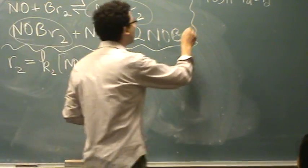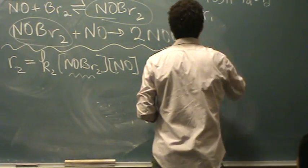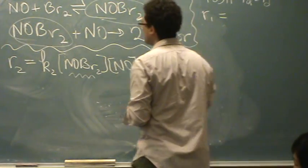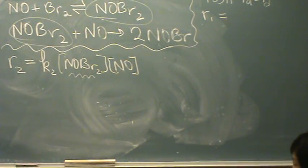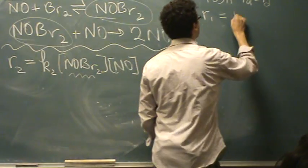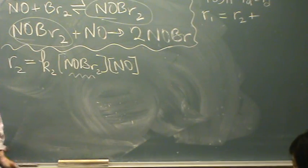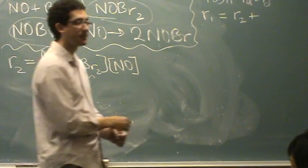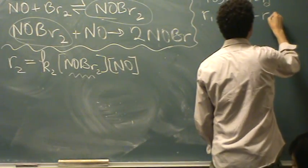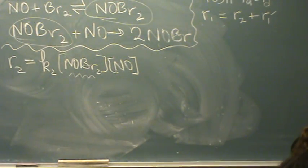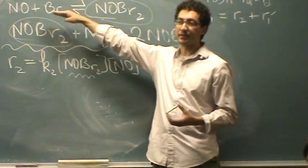The first one, rate 1. Okay. Where does it disappear? Rate 2. And where else does it disappear? Rate 1 reverse. If rate 1 goes backwards, that intermediate disappears. See what I mean? It gets consumed if the reaction goes backwards.